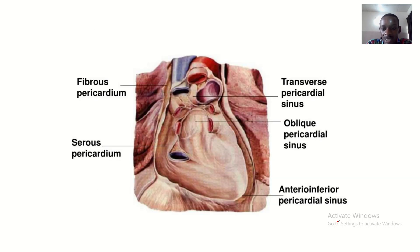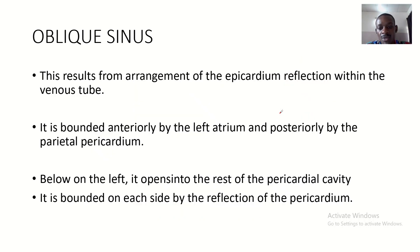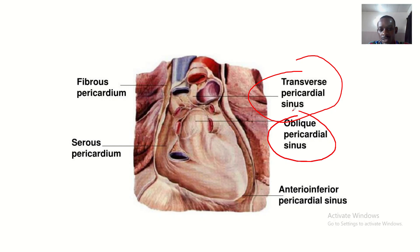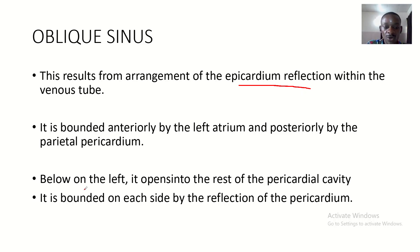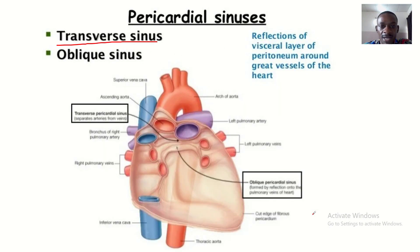Now let's talk about the oblique pericardial sinus. The oblique sinus results from the arrangement of the epicardium reflection within the venous tube. It is bounded anteriorly by the left atrium and posteriorly by the parietal pericardium. Below and on the left it opens into the rest of the pericardial cavity, and it is bounded on each side by the reflection of the pericardium.